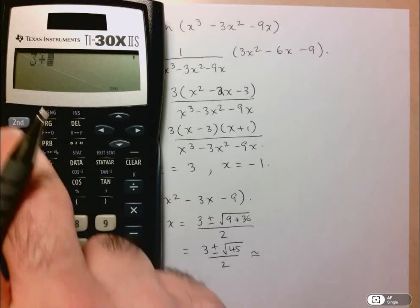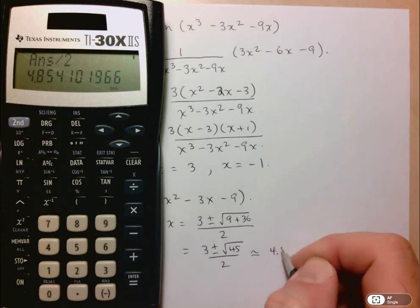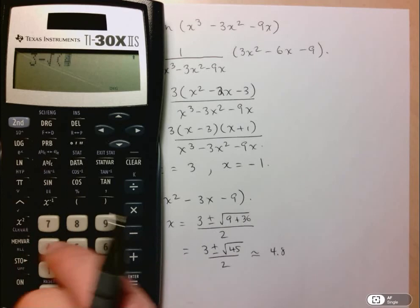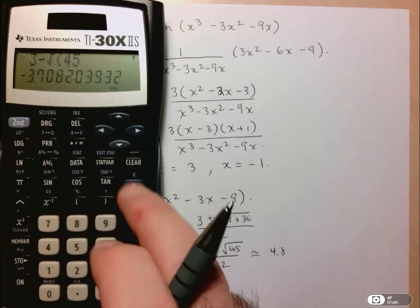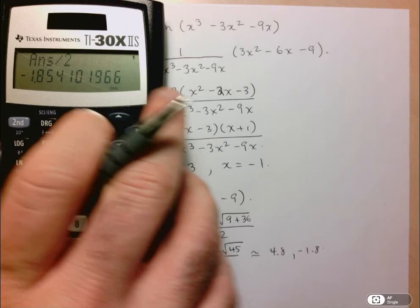So 3 plus square root of 45 divided by 2, that's about 4.8. And here we've got 3 minus square root of 45 divided by 2, so about negative 1.8.